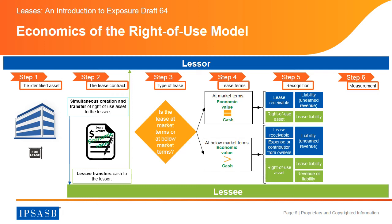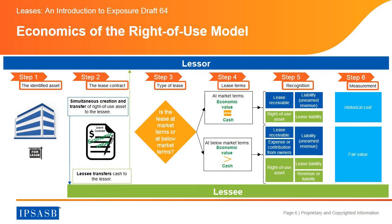The final step is step 6, measurement. For leases at market terms, the measurement basis is historical cost, because it is consistent with the IPSASB literature to measure exchange transactions. For leases at below market terms, the measurement basis is fair value, because it is also consistent with the IPSASB literature to measure non-exchange transactions and concessionary loans. Therefore, both measurement bases are expected to result in more comparable information with other similar transactions. Further ahead in this presentation, we will explain in more detail recognition and measurement for both lessors and lessees.